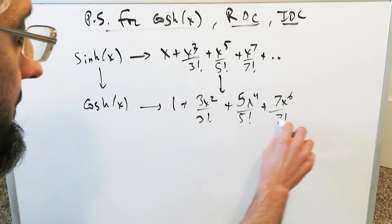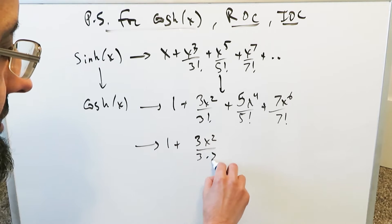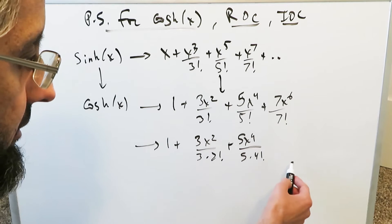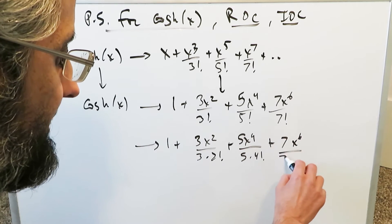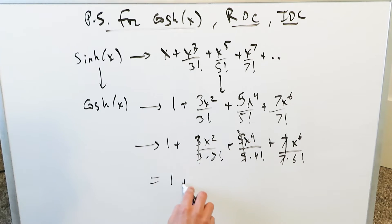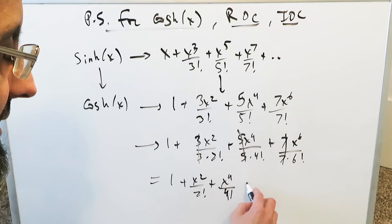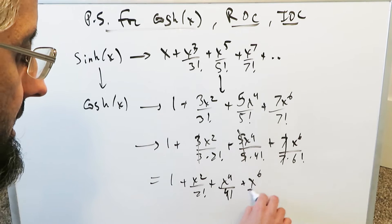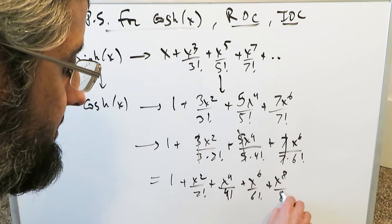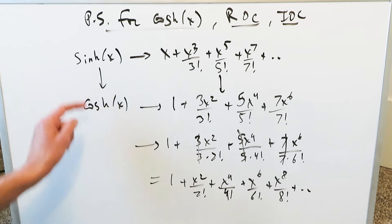You'd have 7x to the 6 over 7 factorial. When you simplify, you get 3x squared over 3 times 2 factorial, then 5x to the 4 over 5 times 4 factorial, then 7x to the 6 over 7 times 6 factorial. These numerical factors cancel out, and what you end up seeing is 1 plus x squared over 2 factorial plus x to the 4 over 4 factorial. The even numbers retain only even items with regards to the exponents and the factorials. That is the series for hyperbolic cosine derived via the shortcut.